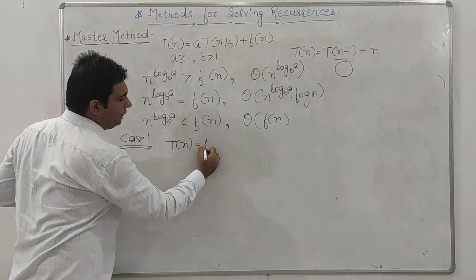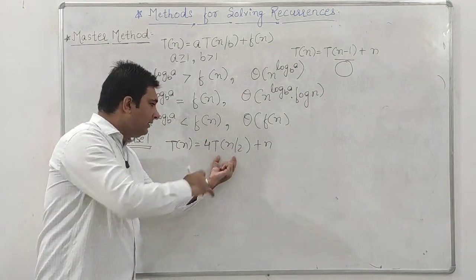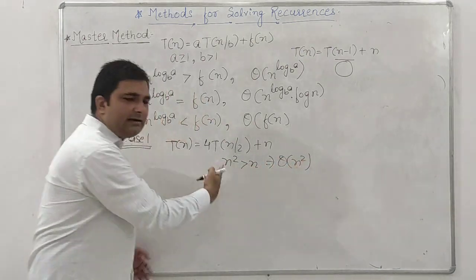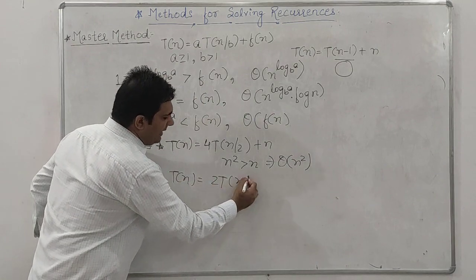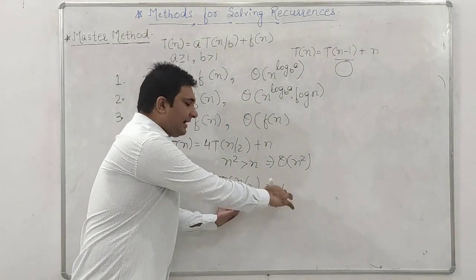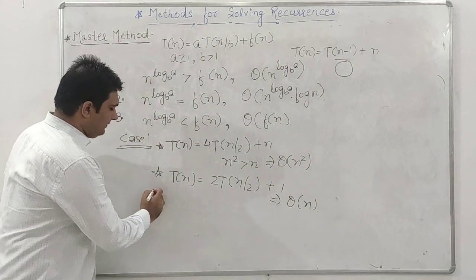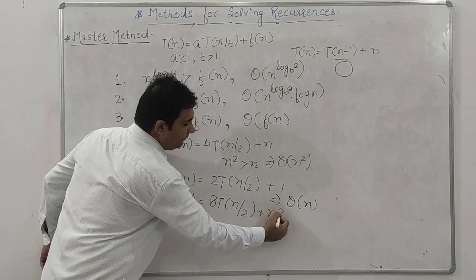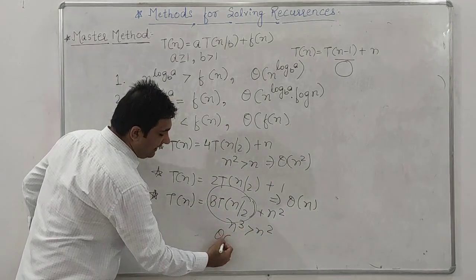Case 1 example: T(n) = 4T(n/2) + n. Here n^(log_b(a)) = n^(log_2(4)) = n^2. Since n^2 is greater than n, the answer is Theta(n^2). Another example: T(n) = 2T(n/2) + 1. Here n^(log_2(2)) = n, which is greater than 1, so the answer is Theta(n). Another: T(n) = 8T(n/2) + n^2. Here n^(log_2(8)) = n^3, which is greater than n^2, so Theta(n^3).